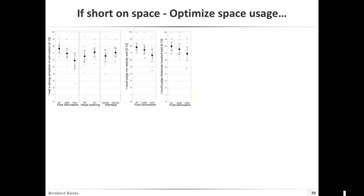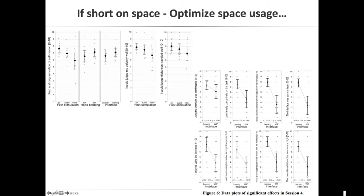Similarly, if you have a lot of different data plots or studies, authors sometimes squish plots a little to use space optimally — as long as it's still readable. The same trick of one Y-axis label for three different dependent variables can save space. Significance values are included in the data plots to make them easy to understand, so they work by themselves.